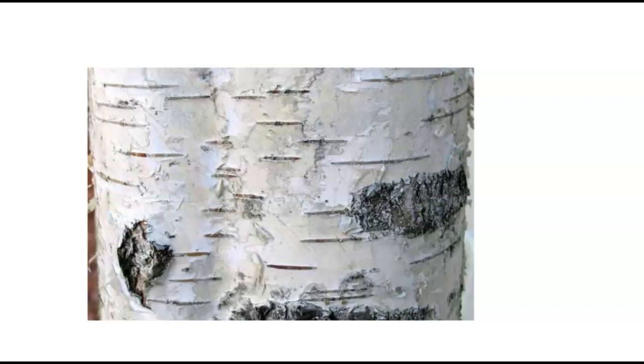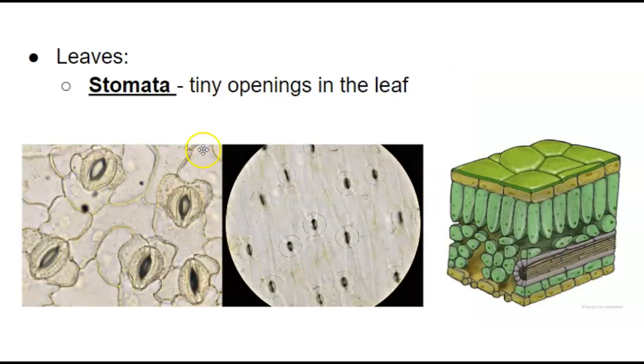So roots, we have diffusion going into roots. We have lenticels for the stem. When we get up to the leaves, we have the openings that are called stomata. So these are the little openings. If we take a look underneath a microscope, this is what they will look like. So the singular of stomata is stoma. So you might have heard that word.